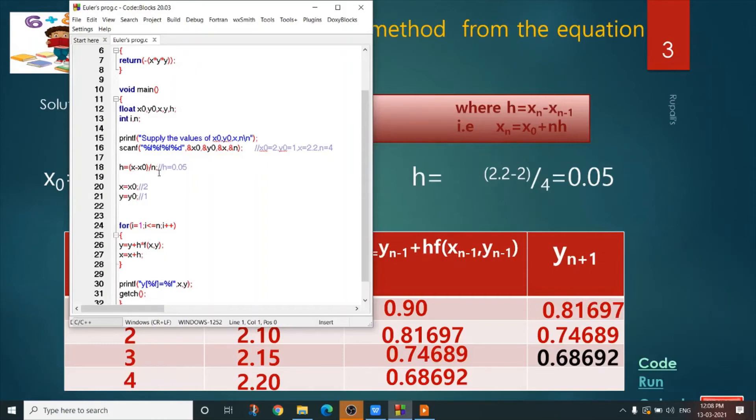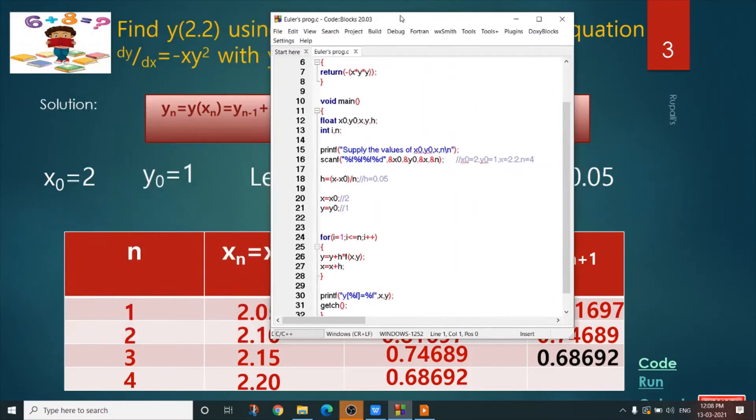x minus x0 divided by n. h is 0.05 after calculation and what is x0? It is 2. What is y0? It is 1. I am storing value of x0 to the variable x and value of y0 to the variable y.